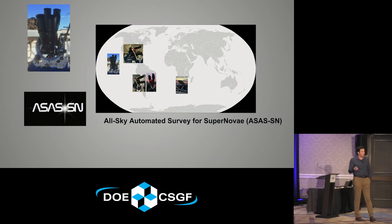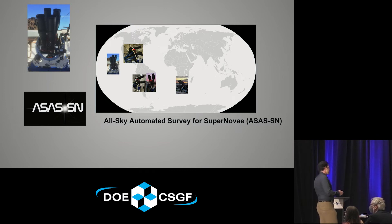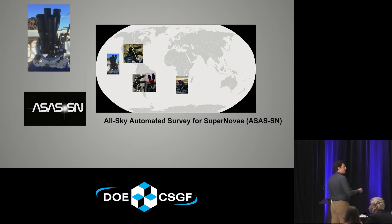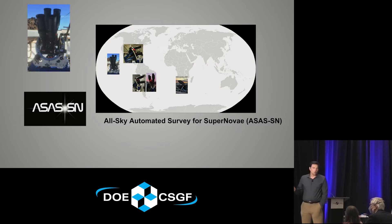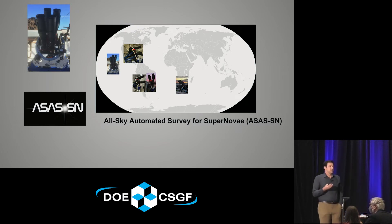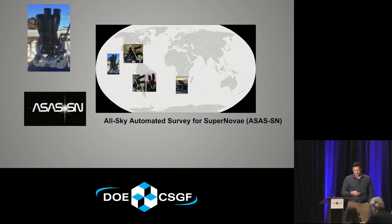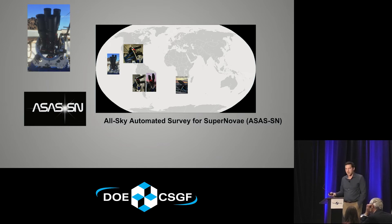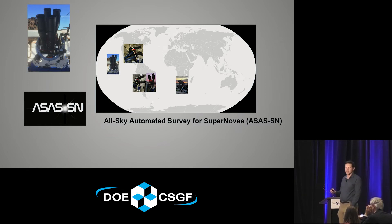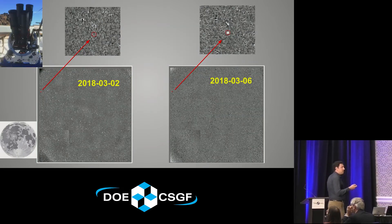This is where I have to plug the survey I work with: ASAS-SN, the All-Sky Automated Survey for Supernovae. Our claim to fame is that we survey the entire sky every night. To get the entire sky, you have to have both northern and southern hemisphere coverage, and weather is always an issue, so we have multiple sites — Hawaii, Texas, two in Chile, and one in South Africa. We use little baby telescopes — essentially fancy Nikon lenses you could buy at a photography store — which allows us to cover a huge field of view and survey the entire night sky.